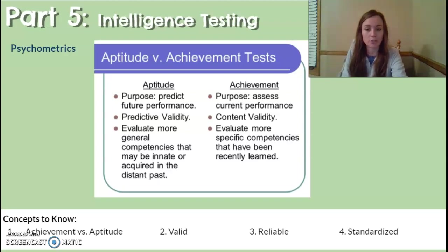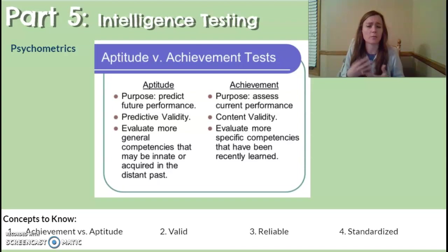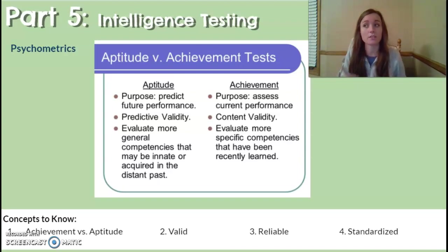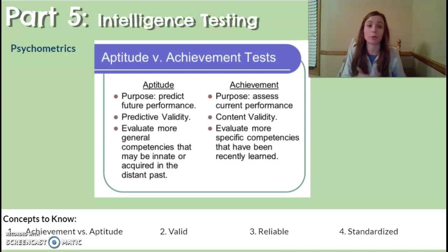There are a few other important terms. A test is valid if the score reflects what it is supposed to be testing. For example, if you scored low on an intelligence test because you didn't understand the questions due to English language barriers or unfamiliar cultural test-taking procedures, the test may actually be measuring your English ability and cultural knowledge rather than intelligence. IQ tests work hard to ensure those barriers are not present. Similarly, if the AP test is difficult to read, it might test reading level rather than AP Psychology knowledge.